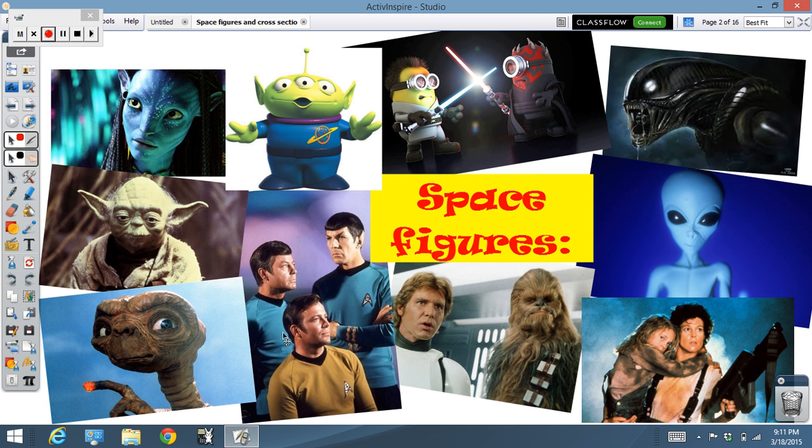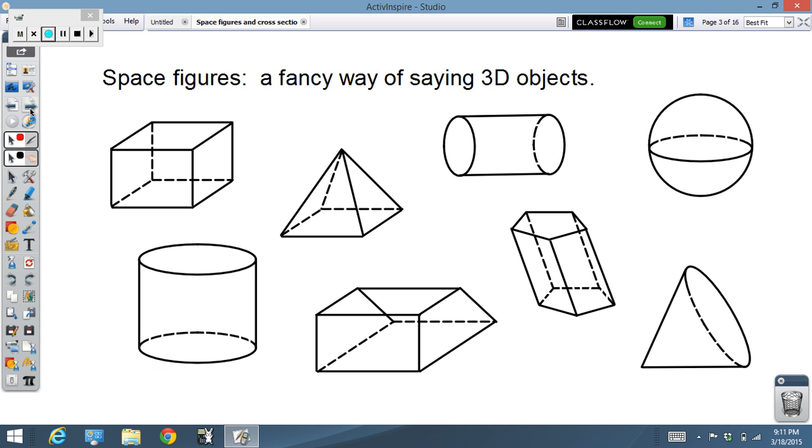When I talk about space figures, this is not the sort of thing I'm talking about. In geometry, a space figure is something like this. It's a fancy way of saying a 3D object, and you guys recognize some of these. This is a cube, or maybe not quite a cube. A rectangular prism would be a better name for that thing. Cylinders, pyramids, prisms, cylinder, sphere, cone, those are things we're going to be looking at in this chapter.